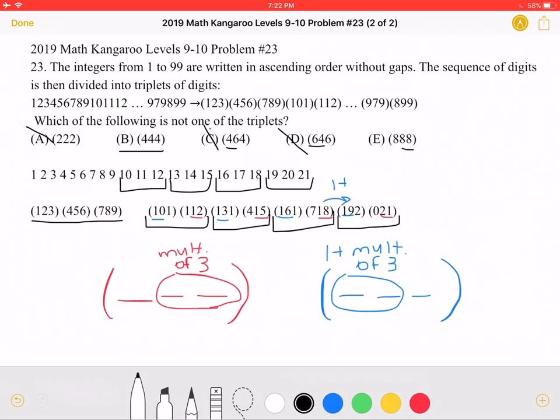88 is not a multiple of 3, but 87 which is 1 less than 88 is a multiple of 3, which means that 888 is a triplet, which is why it's not correct.